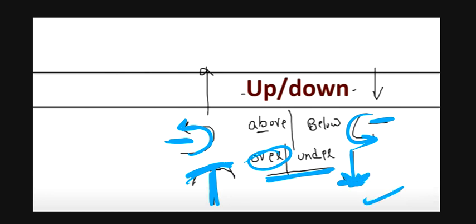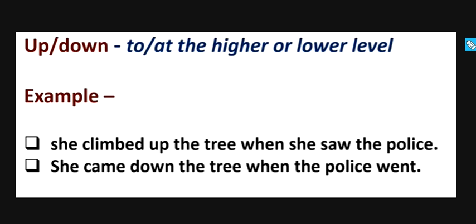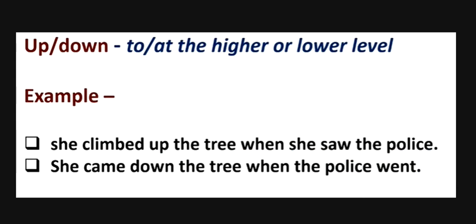We can see, for example, up and down means higher level and lower level. For example, she climbed up the tree when she saw the police. She came down the tree when the police went. So when you saw the police, she went up that tree to a higher level and down to a lower level.